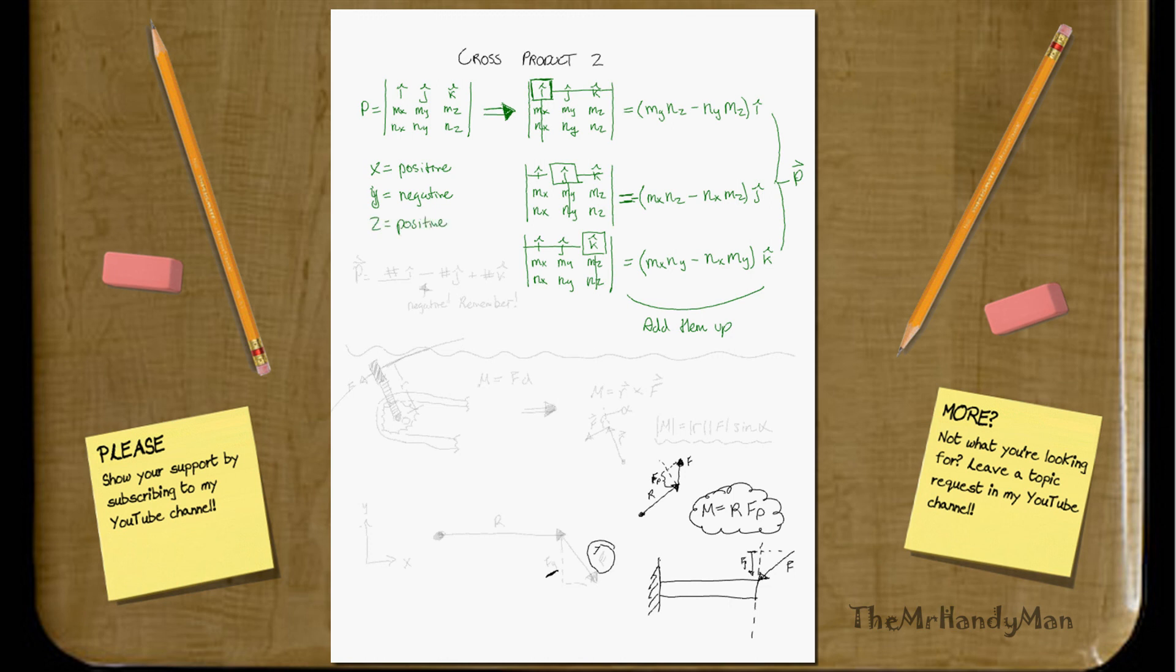Now, you're probably sitting there going, whoa, whoa, whoa, what do you mean? All I'm saying is your result should be P. Your result of this should be something, you have your number, you'll have a number, and then that'll be something I, right? And then it'll be minus a number J, plus a number K. That's all I'm saying, that there's a negative here. You have to subtract it when you use this technique. So, just remember that.